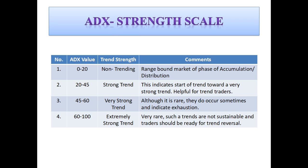When the ADX value ranges from 0 to 20, it means the trend strength is non-trending and it is a range-bound market, a phase of accumulation or distribution. When the ADX value is ranging from 20 to 45, the trend strength is a strong trend, indicating the start of a trend towards a very strong trend, which is helpful for trend-based traders. When the ADX value is 45 to 60, it's a very strong trend. Although this is very rare, they do occur sometimes and indicate exhaustion. When the ADX value is 60 to 100, it's an extremely strong trend and this is extremely rare. Such trends are not sustainable and traders should be ready for a trend reversal at any moment.